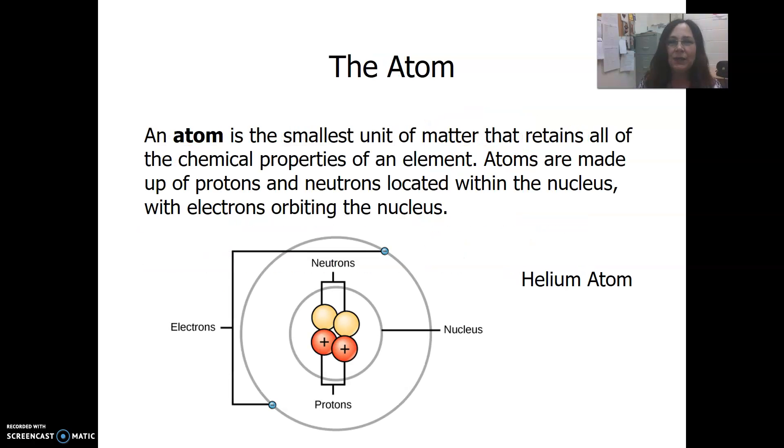The smallest unit of an element is an atom. It's the smallest unit of matter that retains all the chemical properties of an element. But it's fine if you just shorten that and say an atom is the smallest unit of an element. Atoms are composed of particles called subatomic particles, and there are three of them.